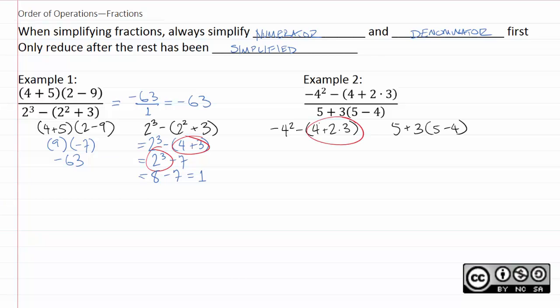And, again, we begin with parentheses. Inside this parenthetical, we have addition and multiplication. Remember, multiplication comes first. So, we will now have negative 4 squared minus 4 plus 6. At that point, we have negative 4 squared minus, well, 4 plus 6 is 10.